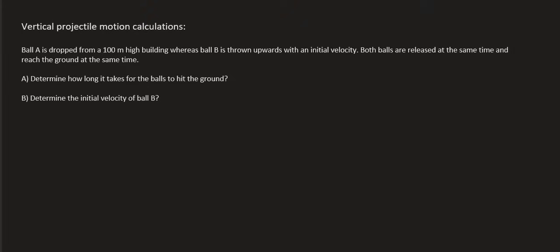In summary, we have ball A which is dropped from a 100 meter high building. So let's quickly draw our building. There we go, there's my good drawing skills. And so we know that height is 100 meters, and that's going to be ball A.